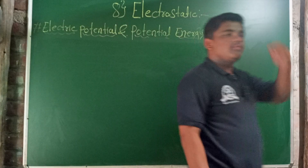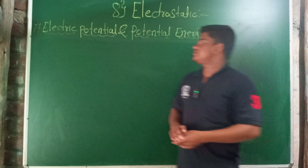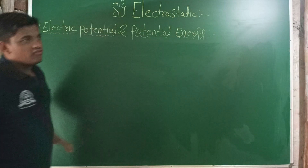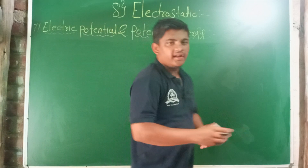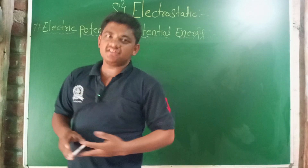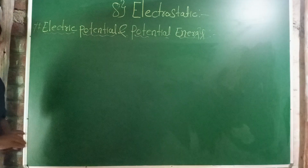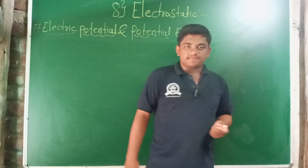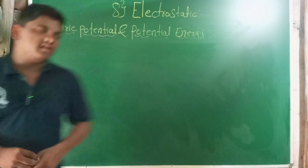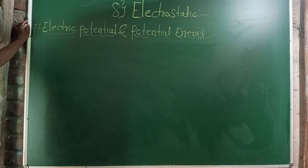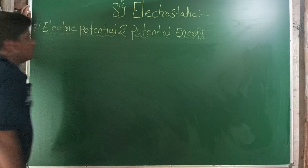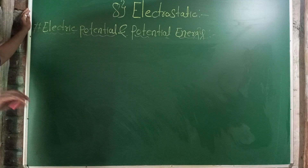Hello students, welcome to our channel The Physics Point. In the previous three lectures we discussed the applications of Gauss's law. In those applications we found the electric field intensity for charged objects having different shapes — a sphere, a wire, and an infinite plane. These three charged objects were taken and the electric field intensity was found for each.